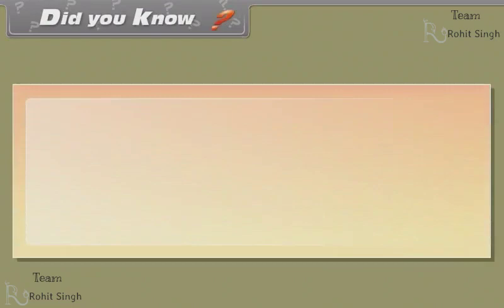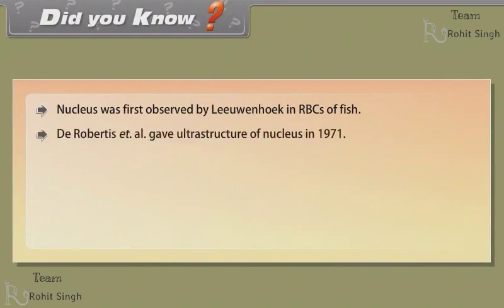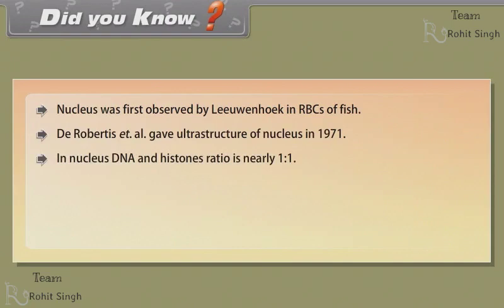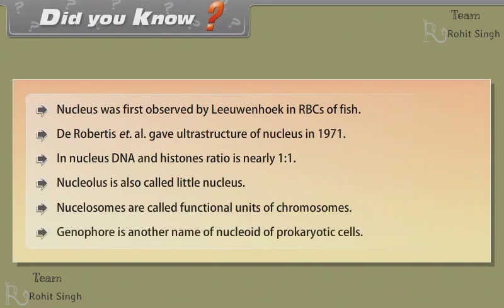Nucleosomes — Did you know? Nucleus was first observed by Leeuwenhoek in RBCs of fish. De Robertis et al. gave the ultrastructure of nucleus in 1971. In the nucleus, the DNA to histones ratio is nearly 1:1. Nucleolus is also called the little nucleus. Nucleosomes are called the functional units of chromosomes. Genophore is another name for the nucleoid of prokaryotic cells.